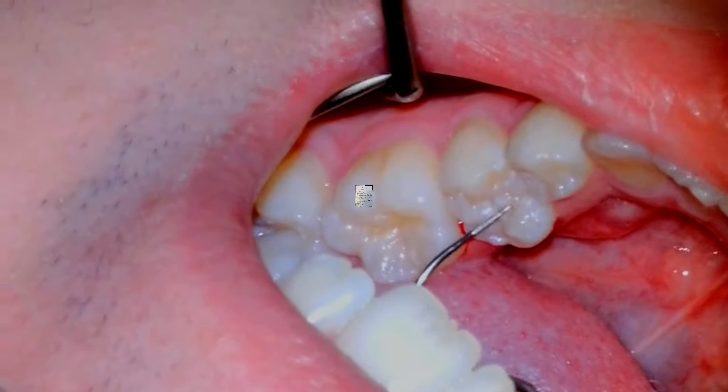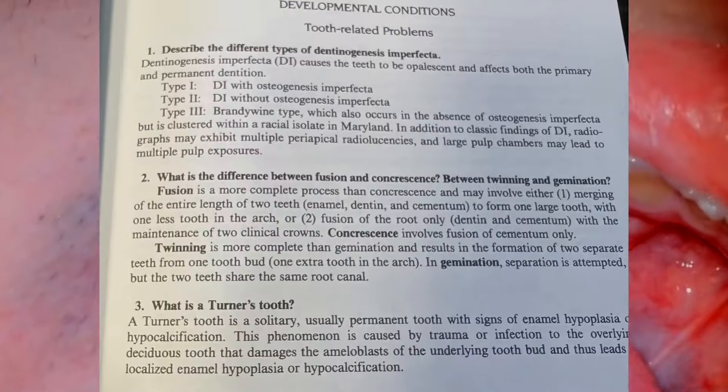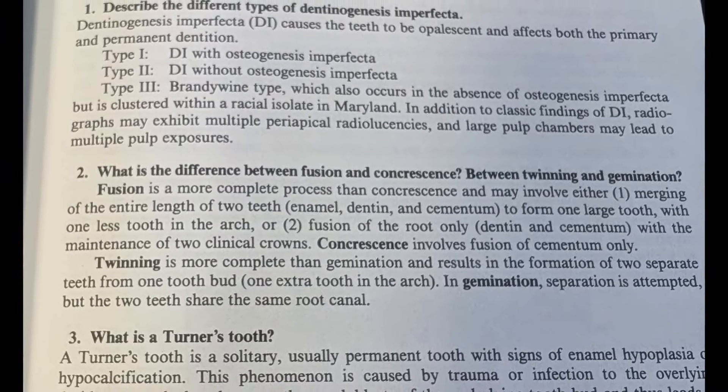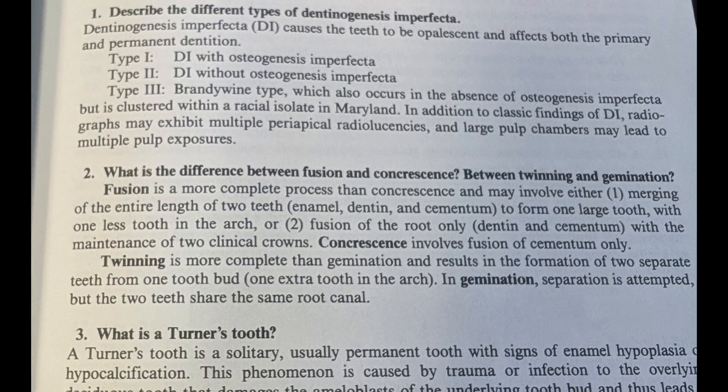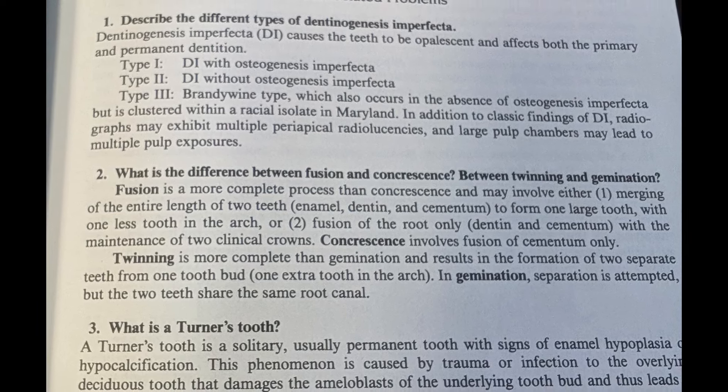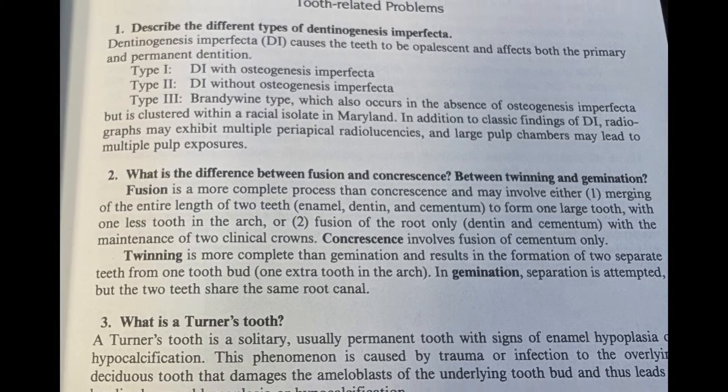So what is twinning? Twinning is the formation of two separate teeth from one tooth bud. It's different than fusion since an extra tooth develops.